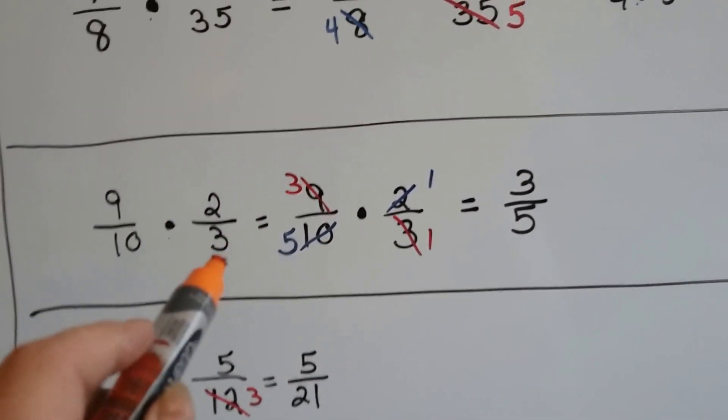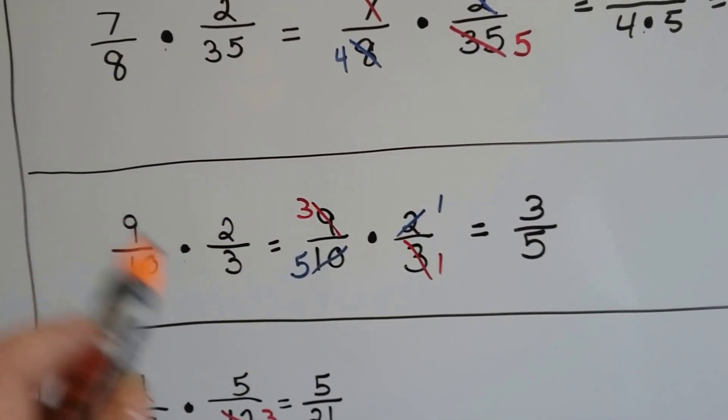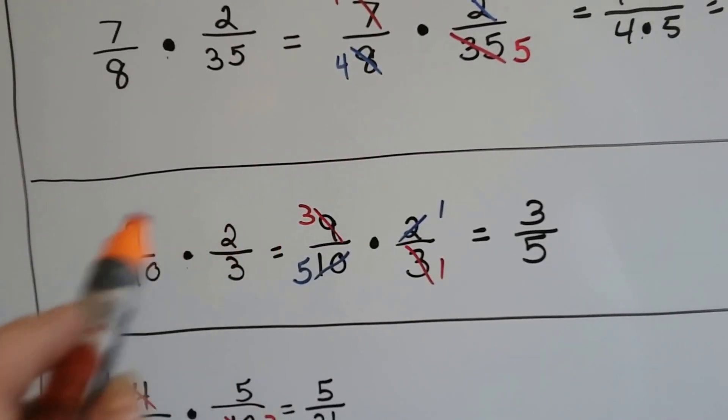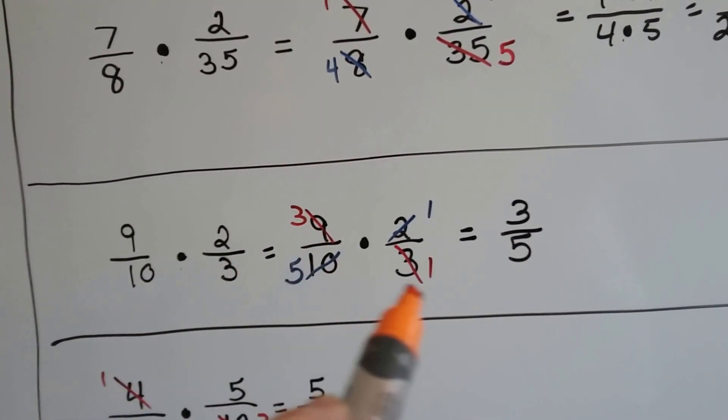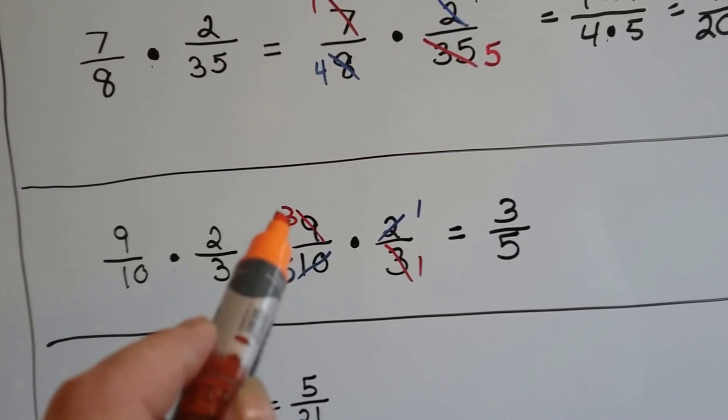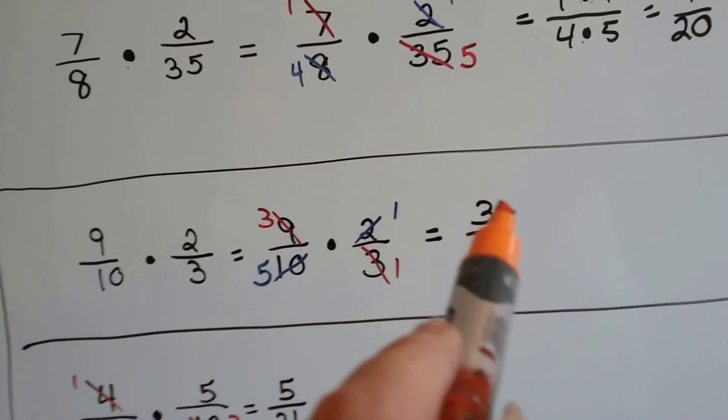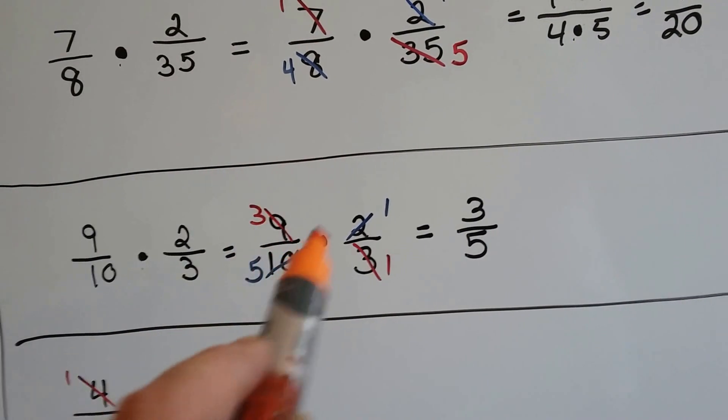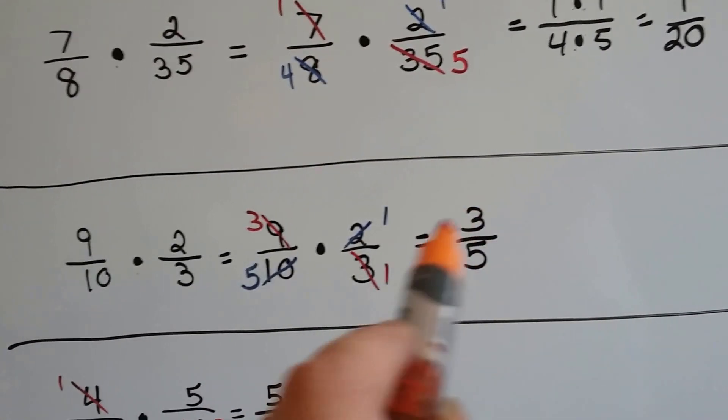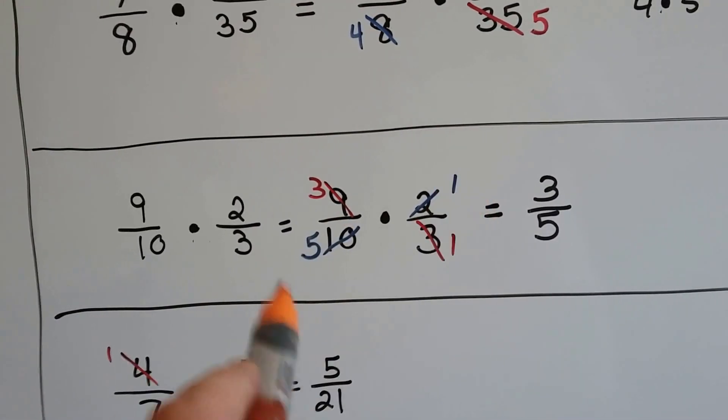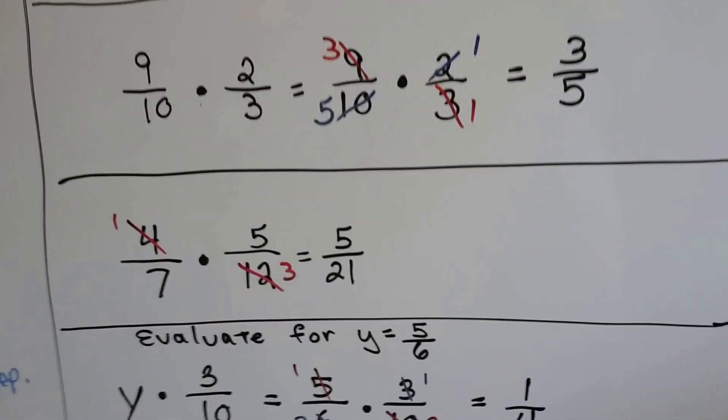Nine-tenths times two-thirds, the nine and the three can work together, and the two and the ten can work together. They have to be crossways. They can't be straight across. It has to be numerator to denominator and numerator to denominator. So there's one three in a nine. There's three of them. There's one two, and there's five twos in the ten. So now we just have three-fifths. We didn't have to do nine times two is 18 over 30. We would have had 18 thirtieths if we did it the old way, and then we would have had to reduce and reduce to get to three-fifths. This way we just cancel them out by using division and the greatest common factor, and we're simplified when we answer it.